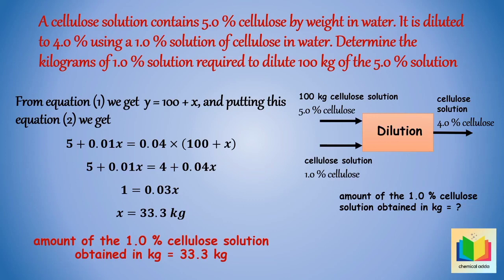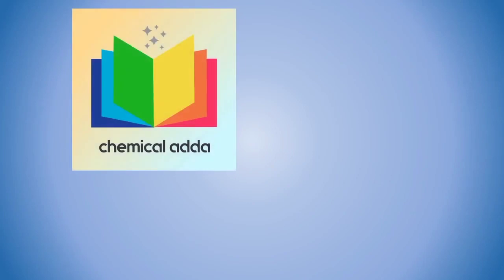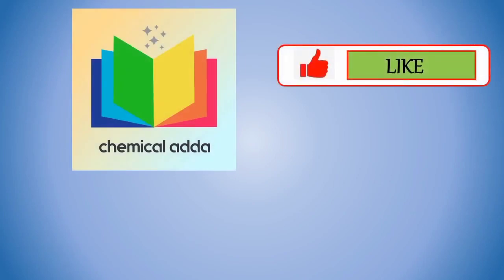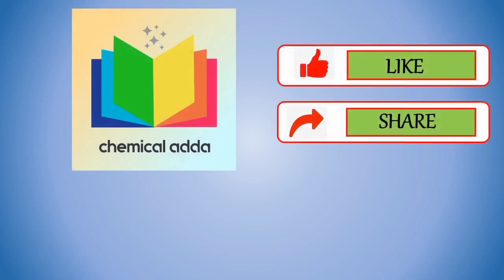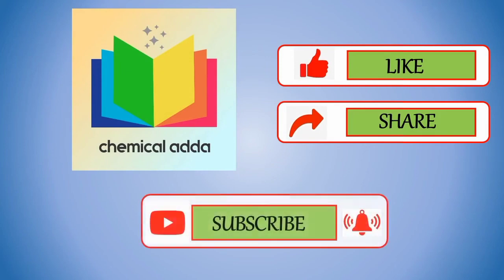That's all — examples based on material balance without chemical reaction for mixing, blending and dilution operations. In the next video we will discuss another set of questions. If you like my video, please like and share this video with your friends, and subscribe to my YouTube channel for more.